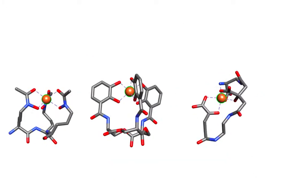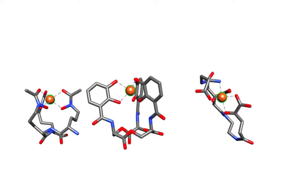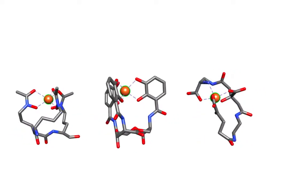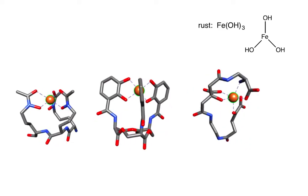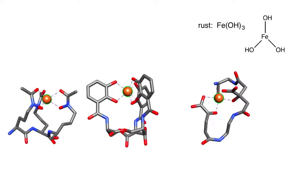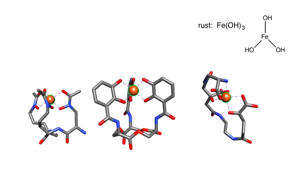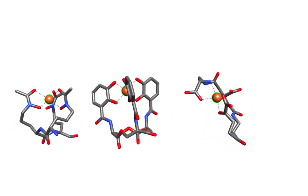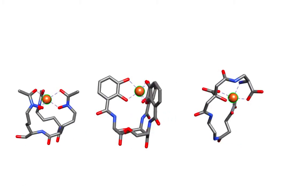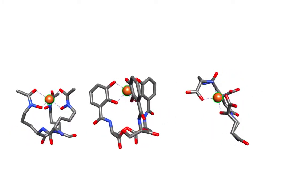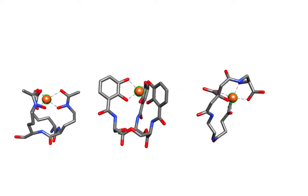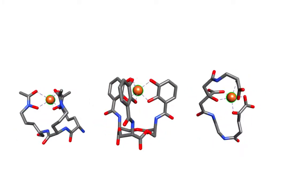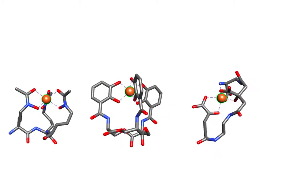These are siderophores. They are secreted by bacteria in aerobic environments in order to acquire essential iron. In aerobic environments, iron is oxidized to rust — it is in the iron-3 state, which is insoluble. The insolubility means the iron concentration is lower than what is needed for the life and growth of microorganisms. These structures are one strategy used to circumvent low iron bioavailability and bring this vital metal into the cell.